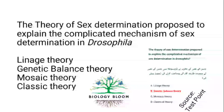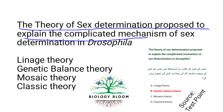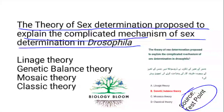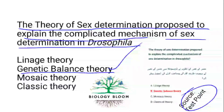The theory of sex determination proposed to explain the complicated mechanism of sex determination in Drosophila — this is also taken from the source. This theory is called the Genetic Balance Theory or Genic Balance Theory, proposed by the American scientist Thomas Hunt Morgan, explaining the complex mechanism of sex determination in Drosophila.